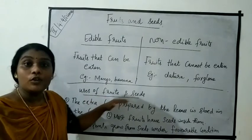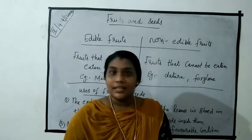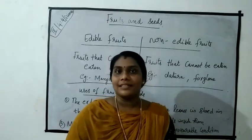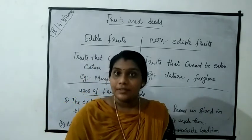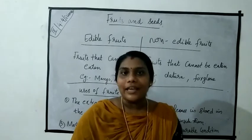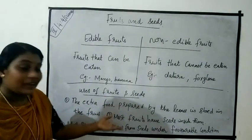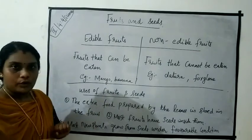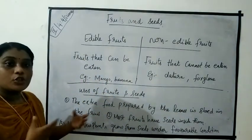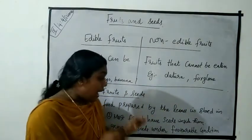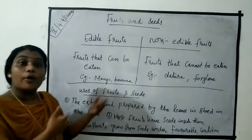Now let's look at the uses of fruits and seeds. The first use: the extra food prepared by the leaves is stored in the fruit. The second use: most fruits have seeds inside them. The third use: most new plants grow from seeds under favorable conditions.